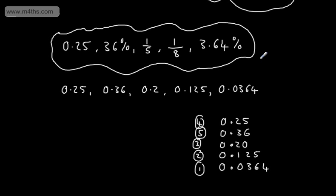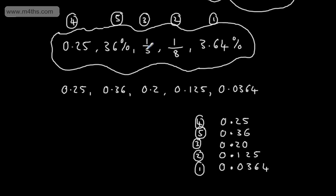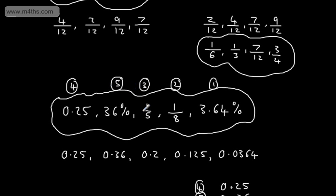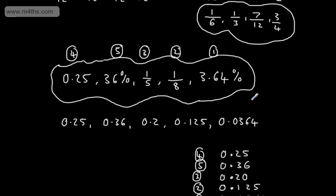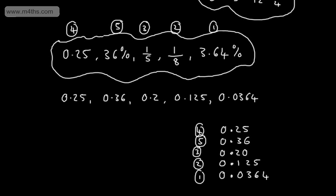All we have to do now is go back and write these in relative to what we had before. So in ascending order: 3.64% is the smallest, then 1/8, then 1/5, then 0.25, and finally 36% is the largest. That's one way we can compare the size of fractions, decimals, and percentages — I simply converted them all into decimals and listed them out in ascending order. You don't have to do that, but converting into fractions or percentages might be slightly trickier.